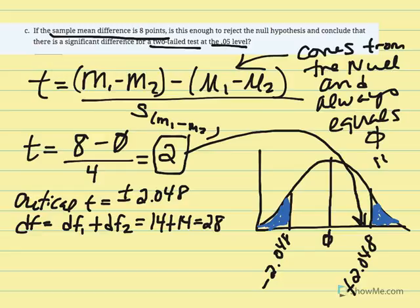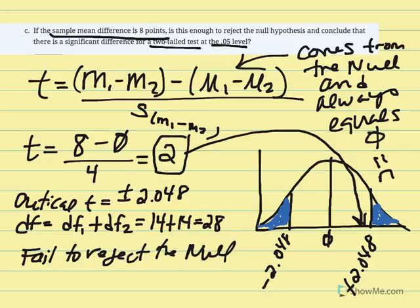We fail to reject the null. The probability of obtaining a t-statistic equal to 2, given the mean difference between the samples, is greater than our alpha. This indicates the t was not large enough to fall in the critical region, and therefore we fail to reject the null hypothesis.